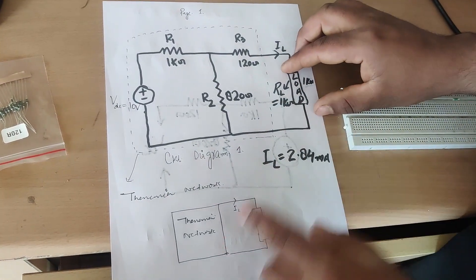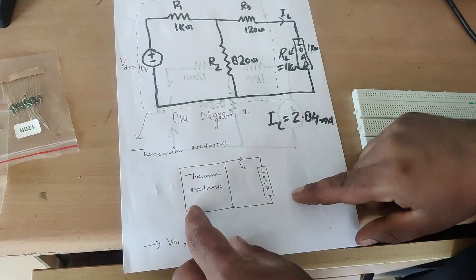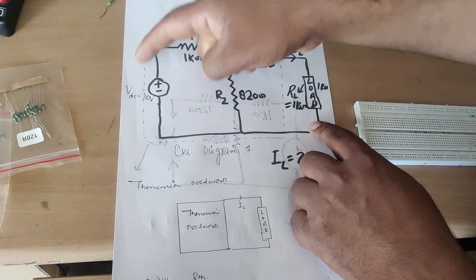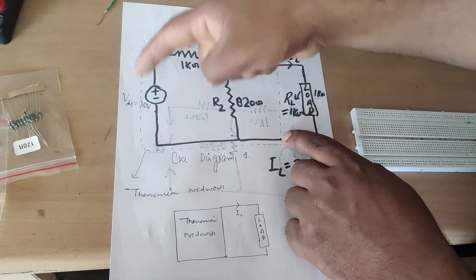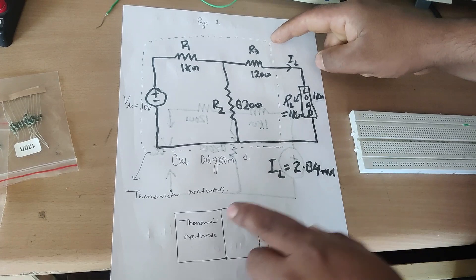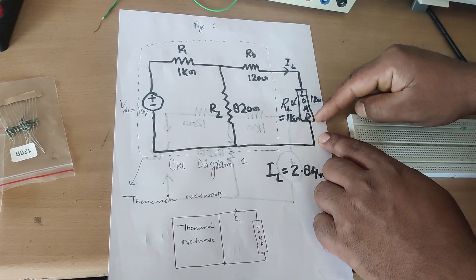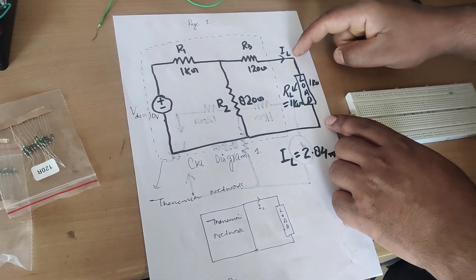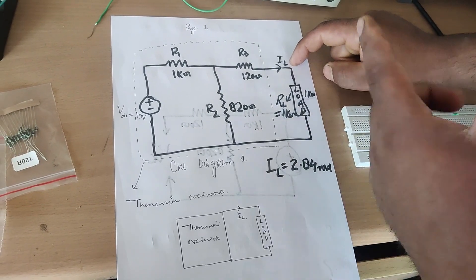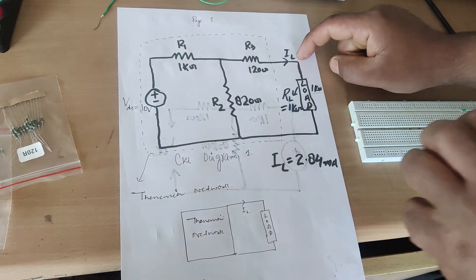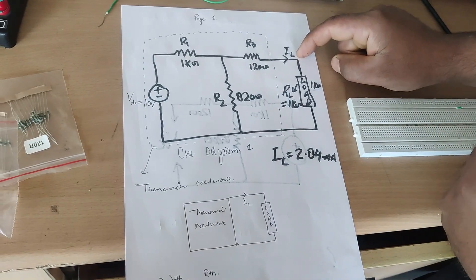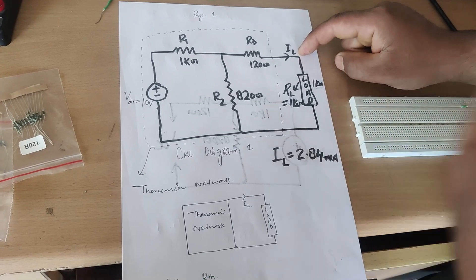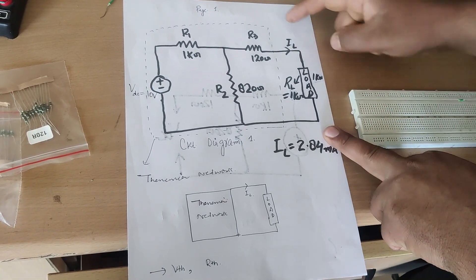After reducing the circuit, it will be reduced to a Thevenin network connected in series with the load resistance of 1 kilo ohm. We will frame this circuit on the breadboard, note the value of IL, then reduce the network to a Thevenin equivalent by measuring VTH and RTH, and compare the value of IL.